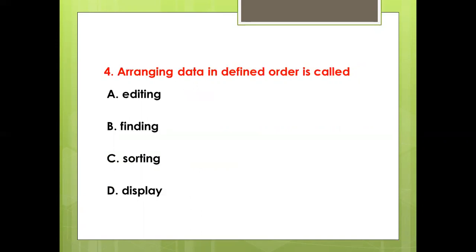Fourth bit: Arranging data in defined order is called — Option A: Editing. Option B: Finding. Option C: Sorting. Option D: Display. Answer: Option C, Sorting.